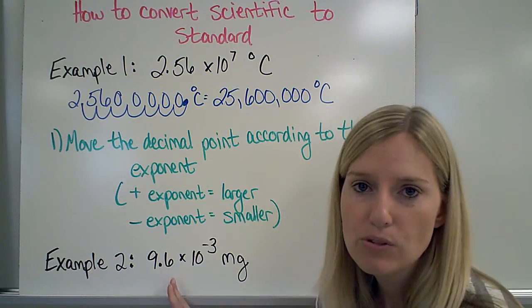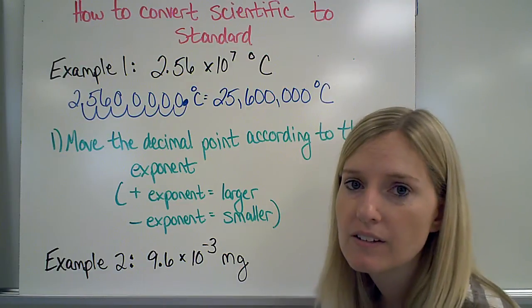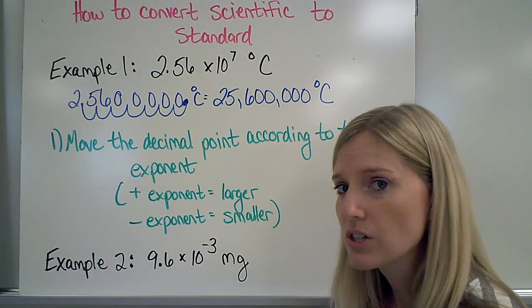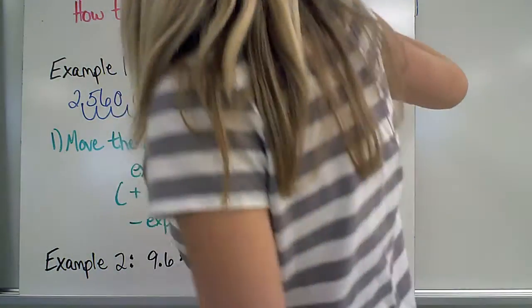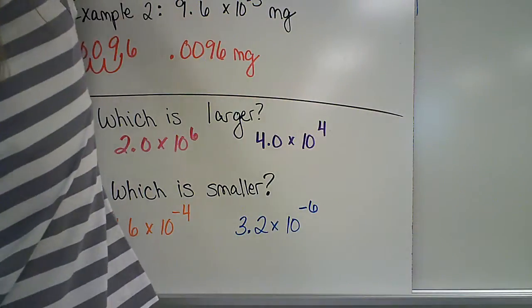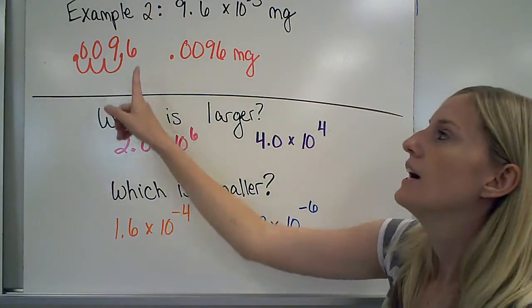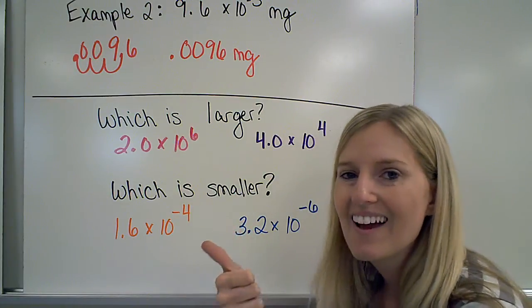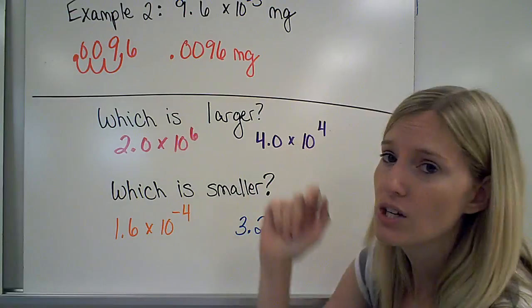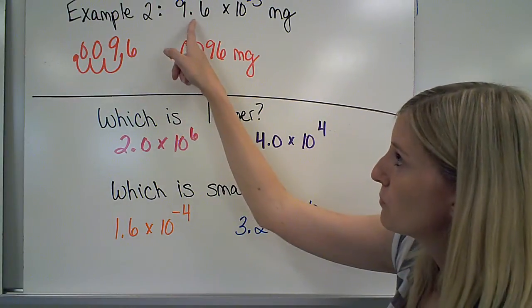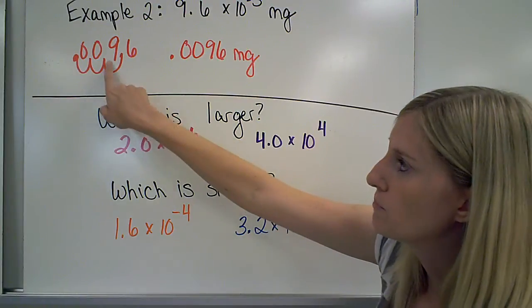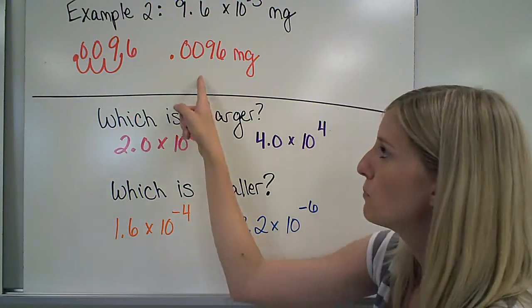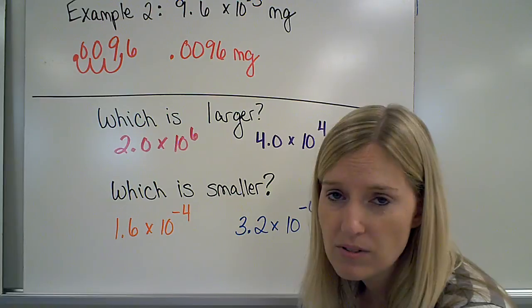Go ahead and try example 2 on your own by pausing the video, and then fast forward to the answer. If you get the wrong answer, make sure you rewind to hear the explanation of example 2. Example 2, my exponent is a negative 3. So right away, I know I'm moving it 3 places, and the negative tells me I need to make this number smaller. I do that by moving the decimal point that way. So I move it one place, and then another, and then another, on top of those swoops, I need to put zeros. So I end up with 0.0096 milligrams for example 2.